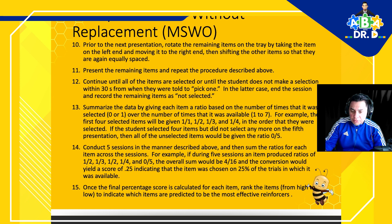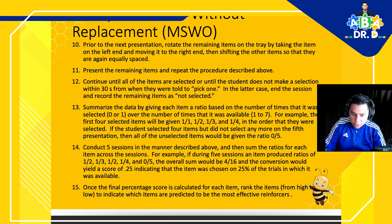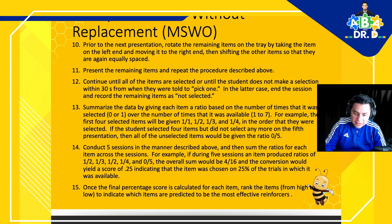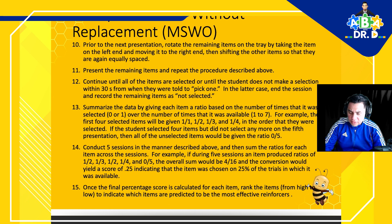Conduct five sessions and then sum the ratios for each item across the sessions. For example, if during five sessions an item produced ratios of 1/2, 1/3, 1/2, 1/4, and 0/5, the raw sum would be 4/16, and the conversion yields a score of 0.25, indicating the item was chosen on 25% of the trials in which it was available. Once the final percentage score is calculated for each item, rank the items from high to low to indicate which are predicted to be the most effective reinforcers.